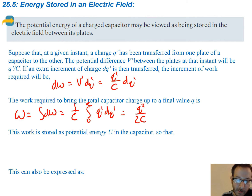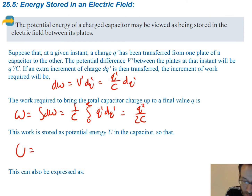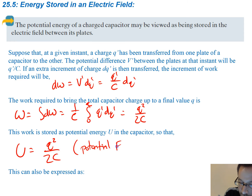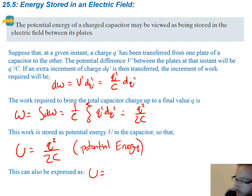So this is the work that is stored as potential energy U in the capacitor. Therefore, our potential energy is just going to be Q squared divided by 2 times the capacitance. You can also express this in terms of the voltage, so that would just be one-half CV squared. So we have a couple of equations here for our potential energy.